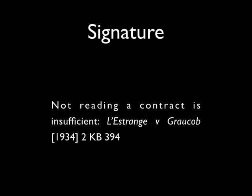In terms of incorporation by signature, where the parties have signed a contract which includes an exclusion clause, that exclusion clause is likely to have been incorporated into the contract. As you may remember from the podcast on mistake, signing a contract without reading it is unlikely to appeal to the courts as a reason to overturn it. So just because you haven't read a contract and subsequently find it contains an exclusion clause, it is highly unlikely you'll be able to overturn it on that basis.